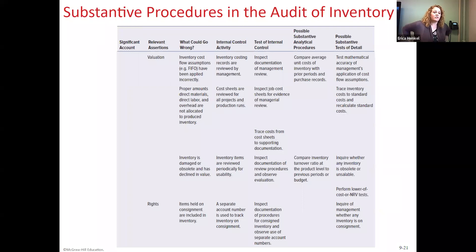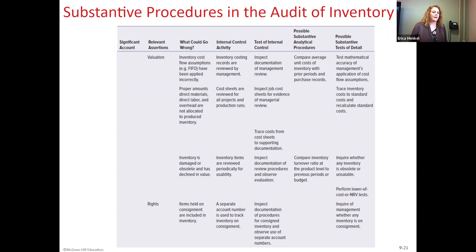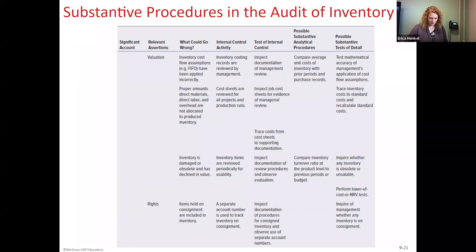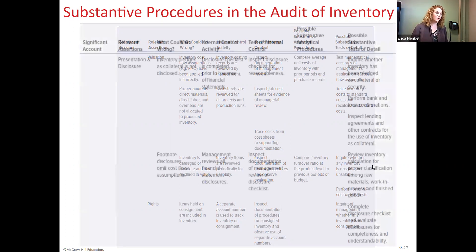Looking at cost analysis, auditors could recalculate expected percentage of cost of goods sold, trace inventory costs to standard expected costs, and make inquiries regarding obsolete inventory. They could perform lower-of-cost-or-net-realizable-value tests, which you learned about in intermediate accounting. They could also talk with management about whether any inventory is not owned by the company — specifically consignment inventory. Other substantive procedures include checking whether any inventory is pledged as collateral or security for loans, in which case bank and loan confirmations would be needed and disclosure would be required.